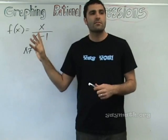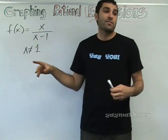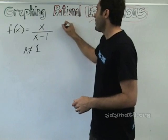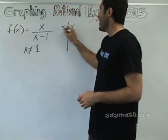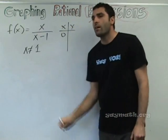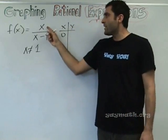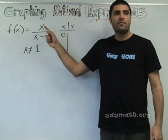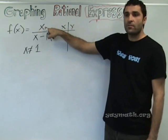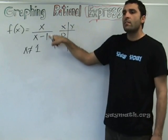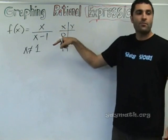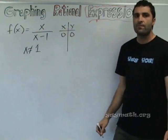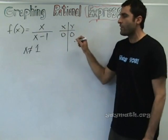Can x be anything else? Can x be equal to zero? Yes. X could be zero. For example, if x were zero, that would be zero here and zero minus one. Zero over negative one, which is zero. So, zero is on the graph.